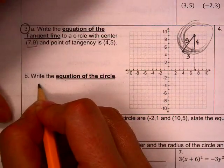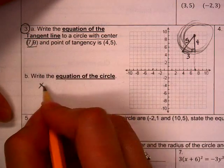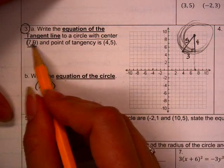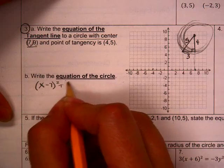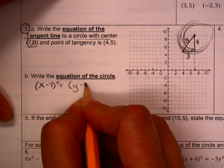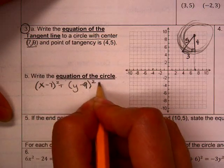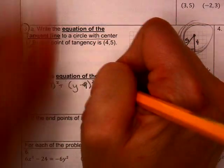So I'm going to have x minus 7, because it's the opposite of the h and the k for the center, plus y minus k, which is 9, is equal to 5 squared, which is 25.